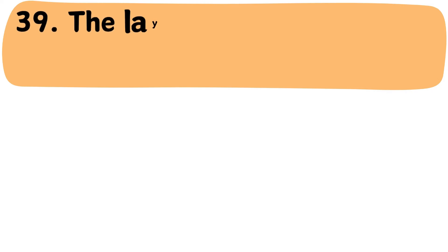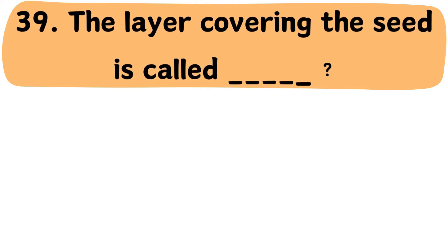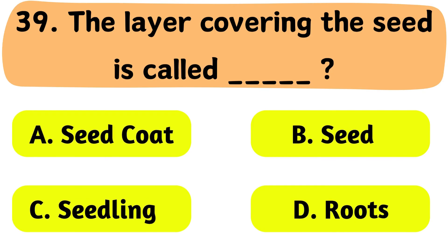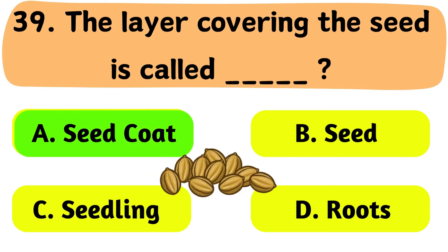Question No. 39: The layer covering the seed is called what? A. Seed coat. B. Seed. C. Seedling. D. Roots. The correct answer is Option A: Seed coat.